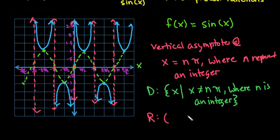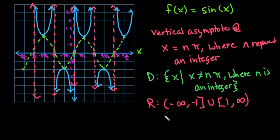So you can either write it in interval notation. So we would say negative infinity to negative 1 inclusive, or you can go from 1 to positive infinity. Or if you prefer set notation, you could say that the range is all y values such that y is less than or equal to negative 1 or y is greater than or equal to positive 1. So whichever notation is a little bit easier for you to understand.